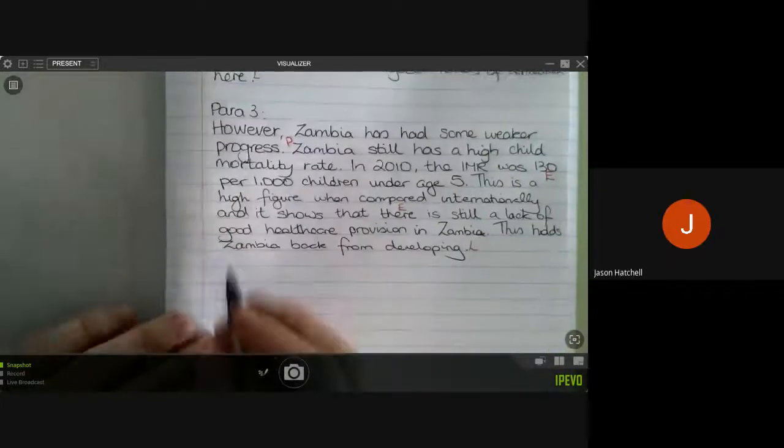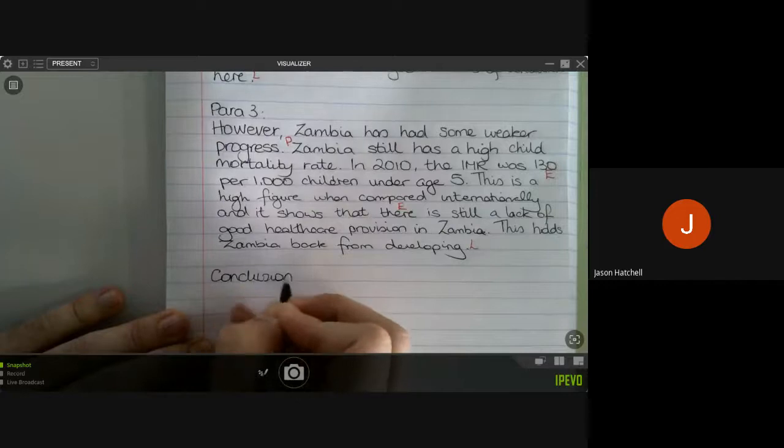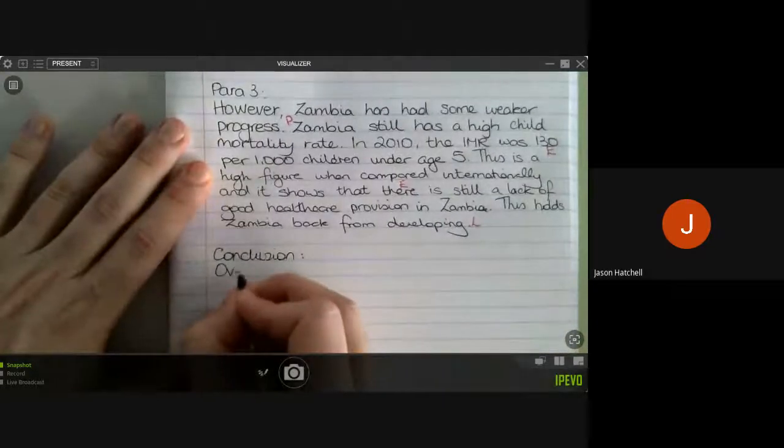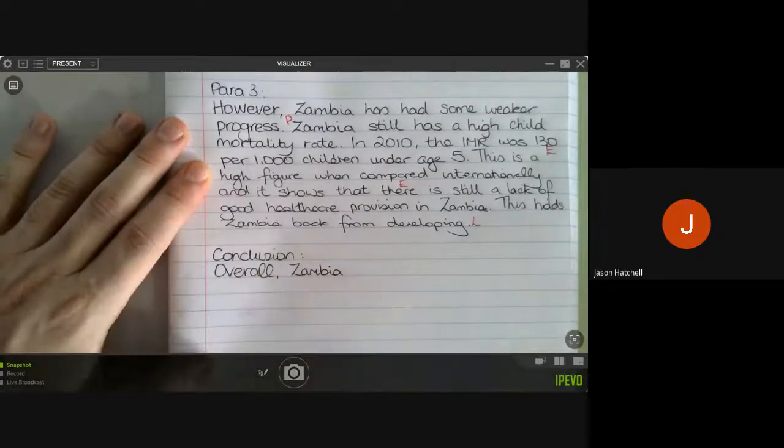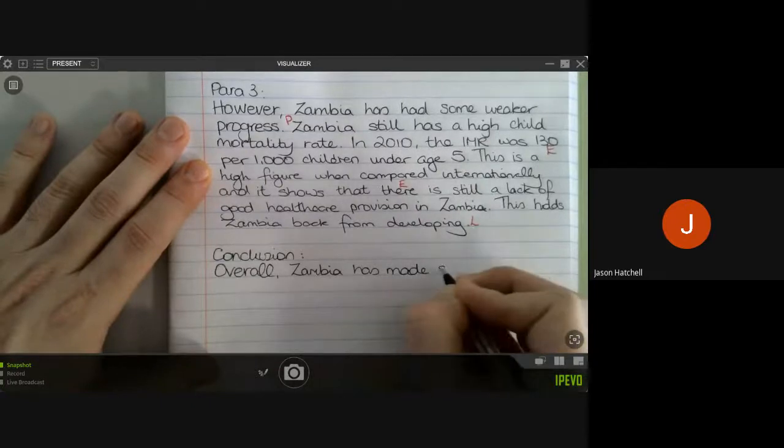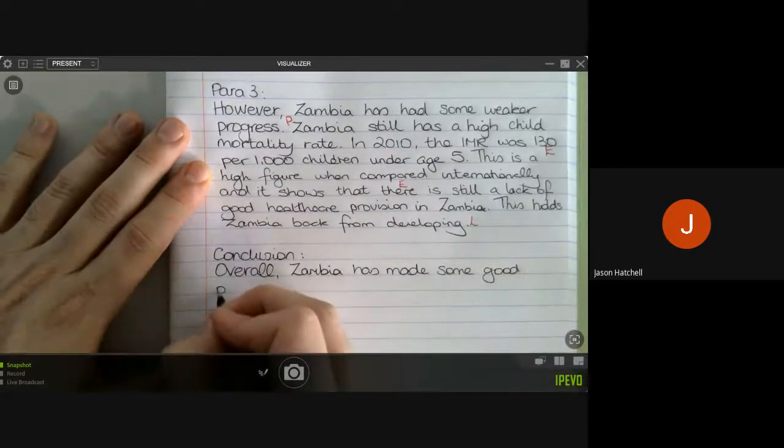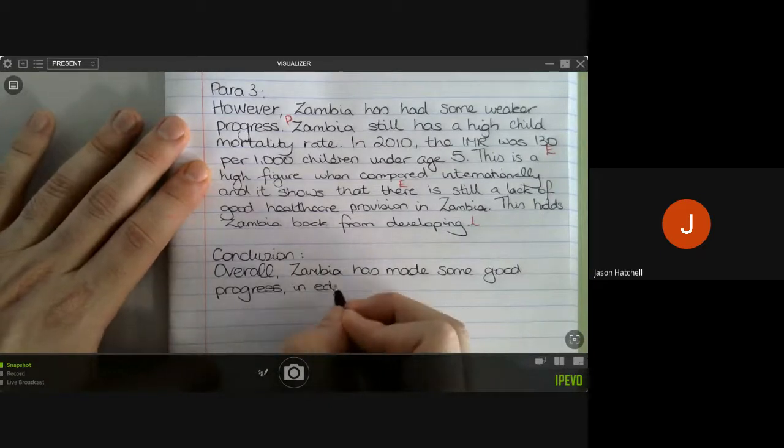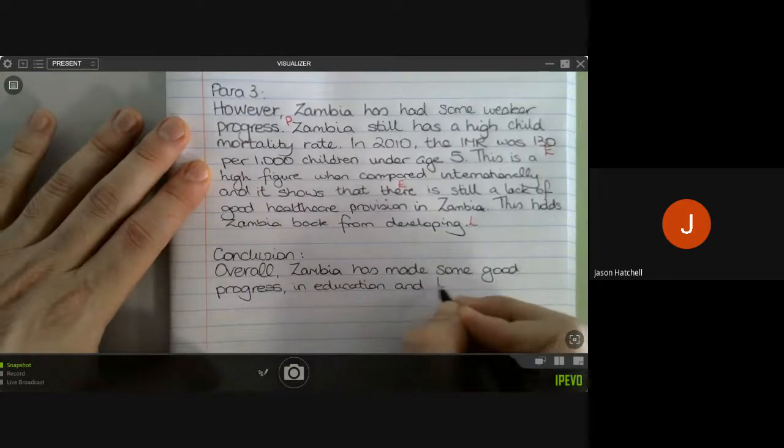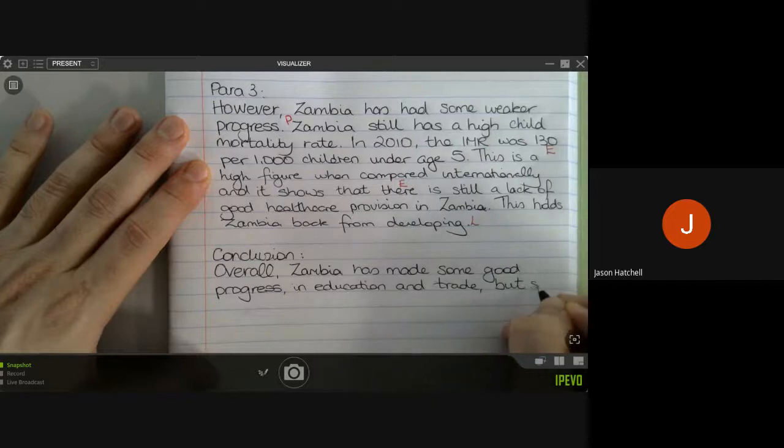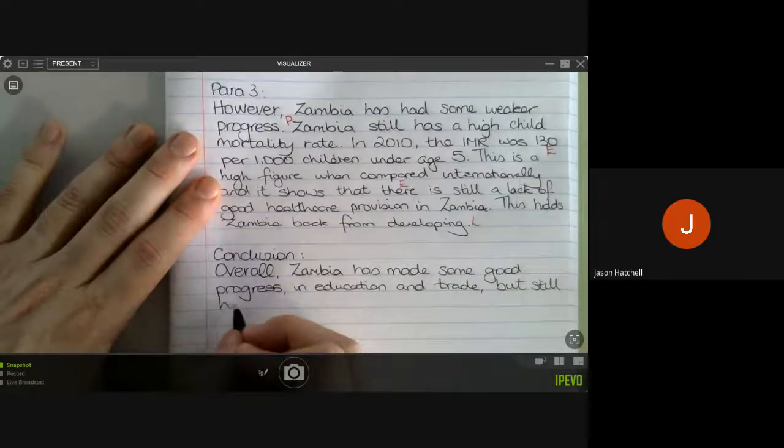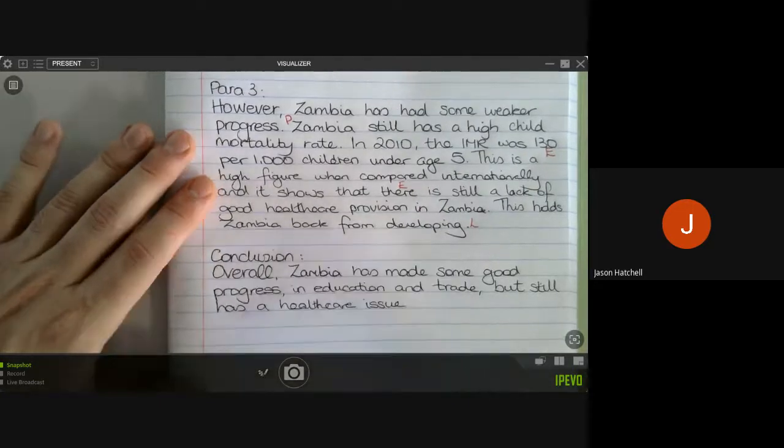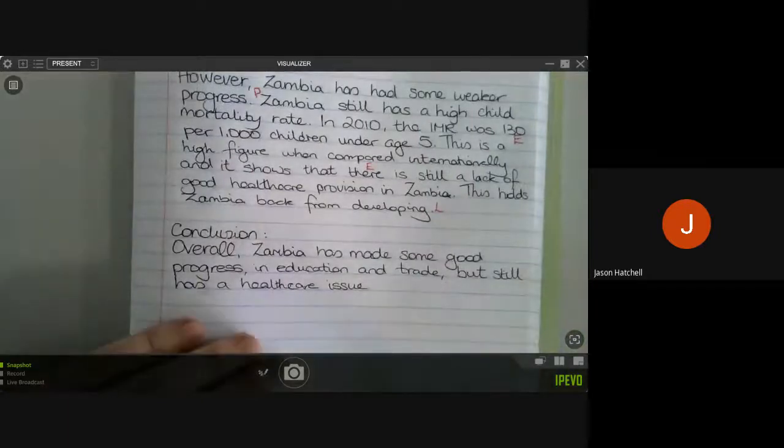So finally, you just need to now wrap up your answer with a conclusion. And you should always try and keep your conclusion as simple as possible. So very simply, I'm going to say overall, Zambia has made some good progress, particularly, as we know, in education and trade but still has a health care issue. And we know it has a health care issue because of the infant mortality rate. And what we've done there is we've simplified the points we have made earlier on in our answer.